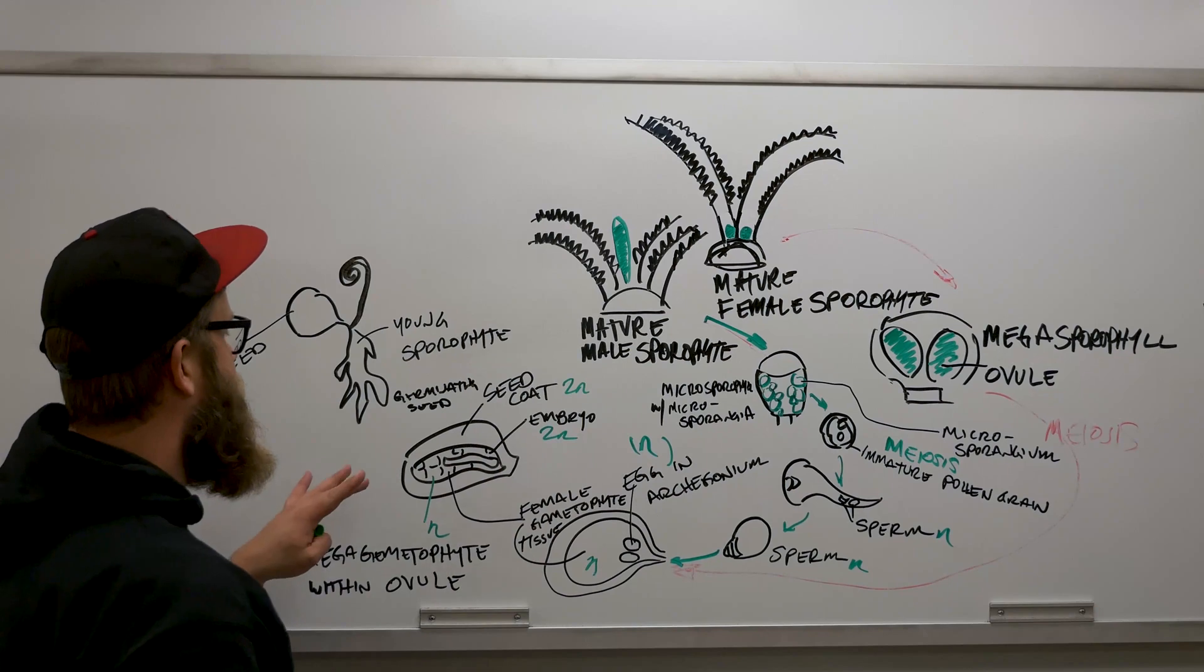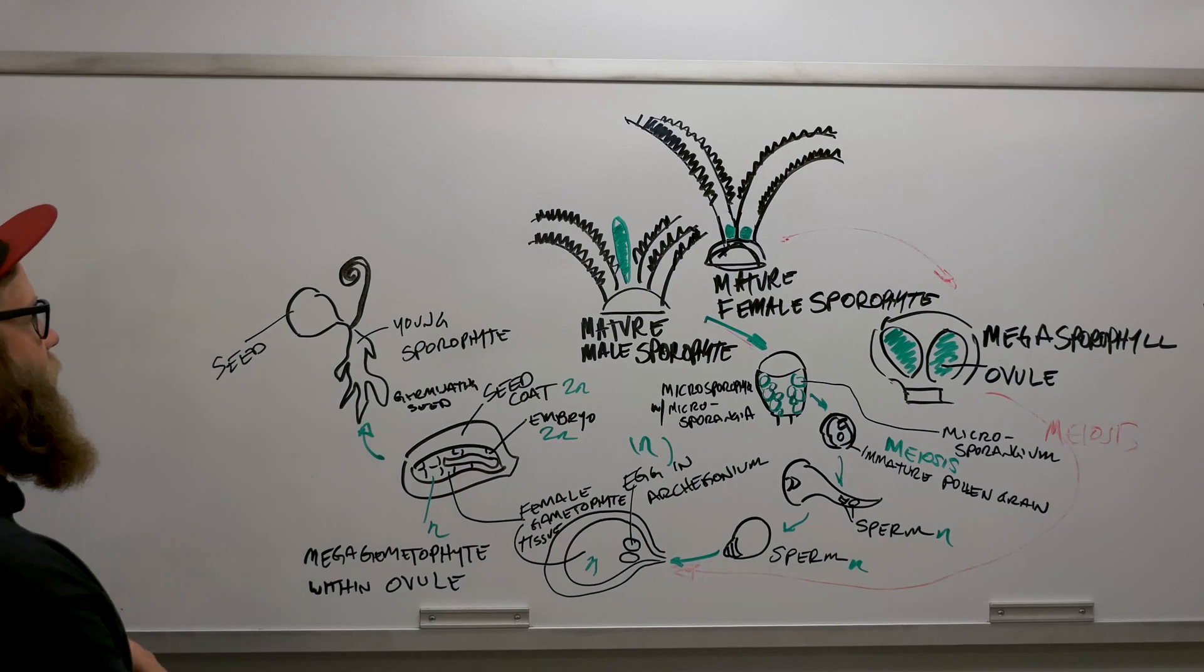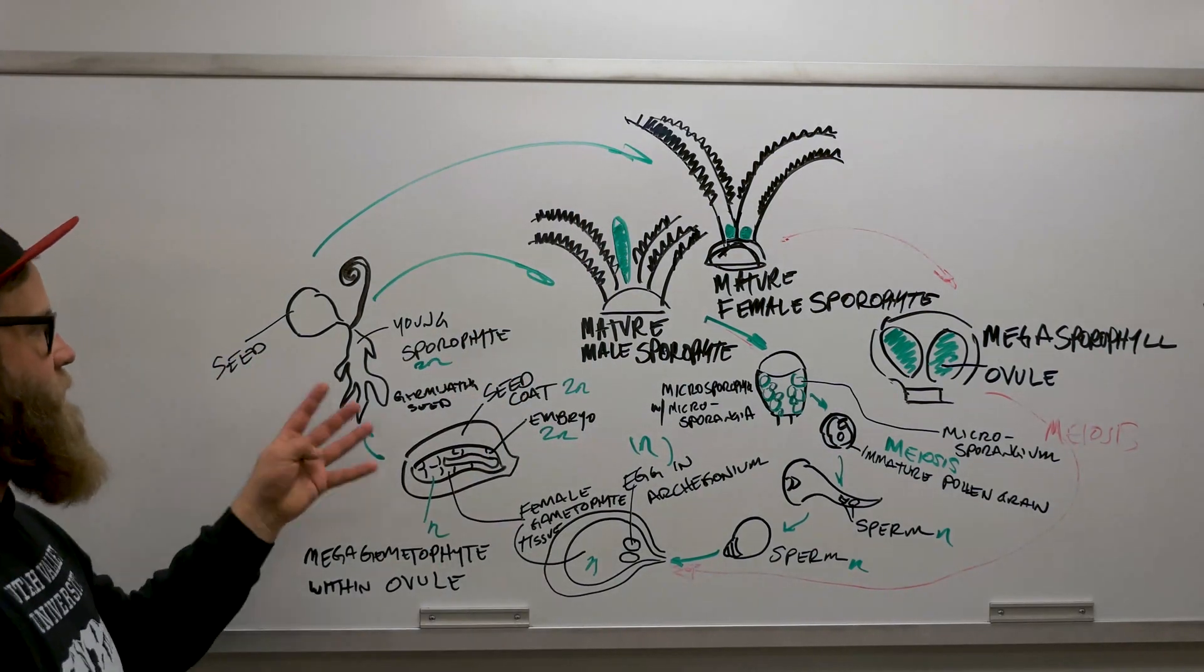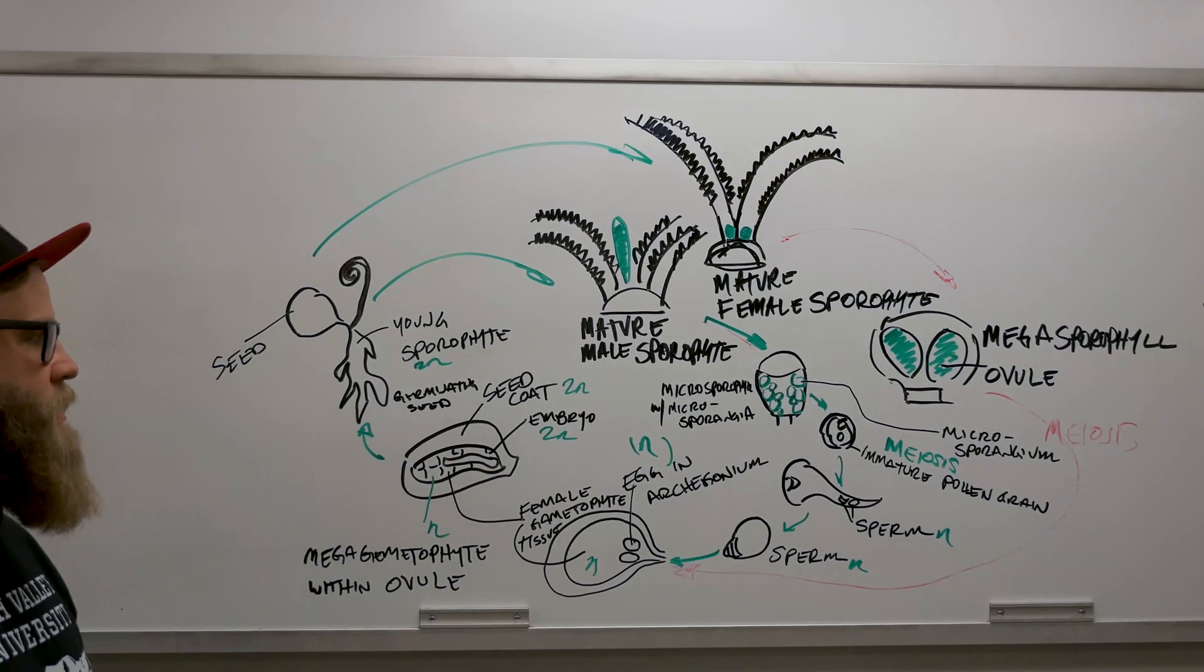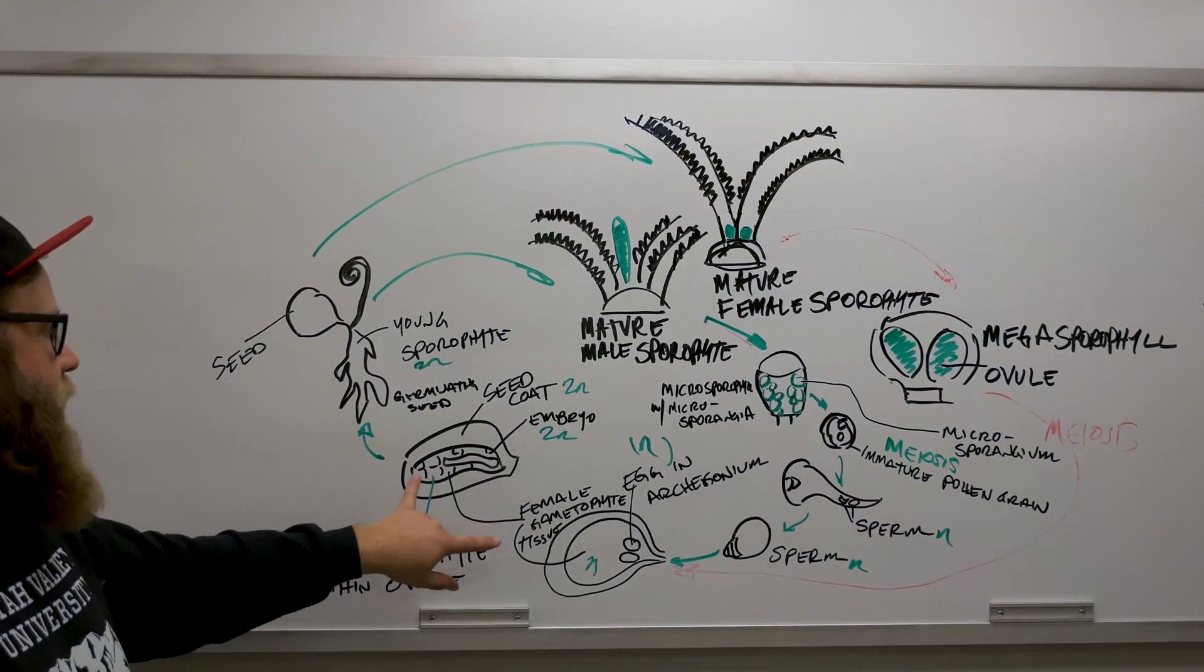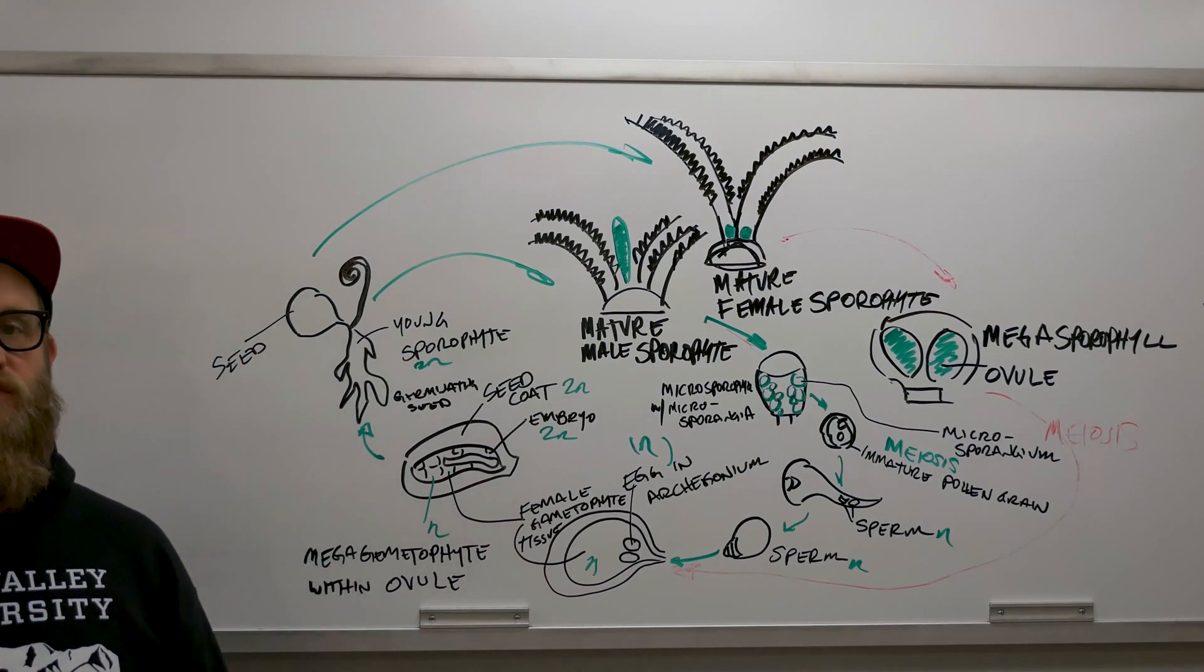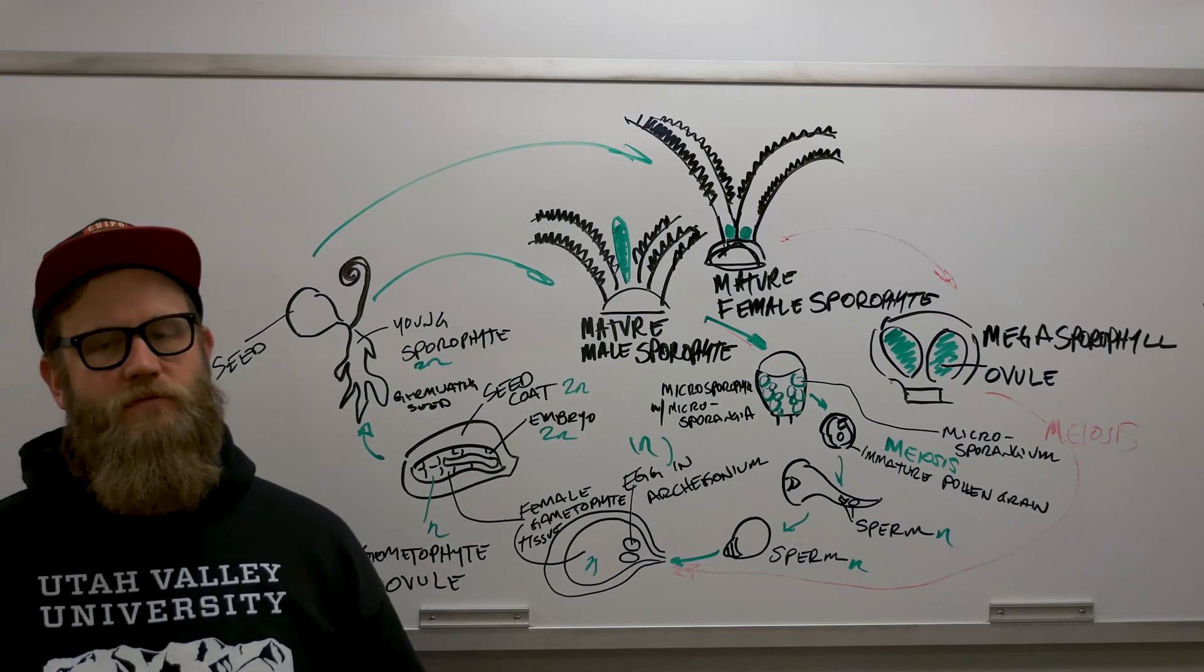This seed coat as well is 2n, and finally we have this seed and sporophyte that's 2n. That can grow into either a male or a female sporophyte as it matures and start this cycle over. The keys to recognize are where meiosis occurs and to differentiate the ploidy, where we have a 2n embryo surrounded by this female gametophyte tissue.